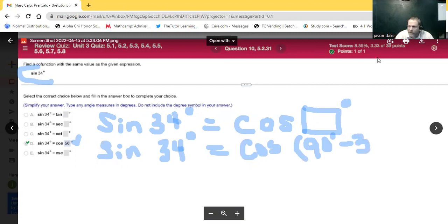Make sure there's no triangle anywhere. And it's 34 degrees equals cosine. We're going to subtract those. That's an S, not a 5. 56 degrees.